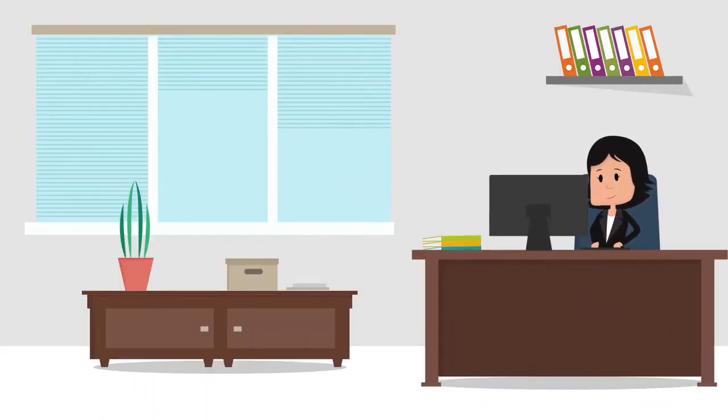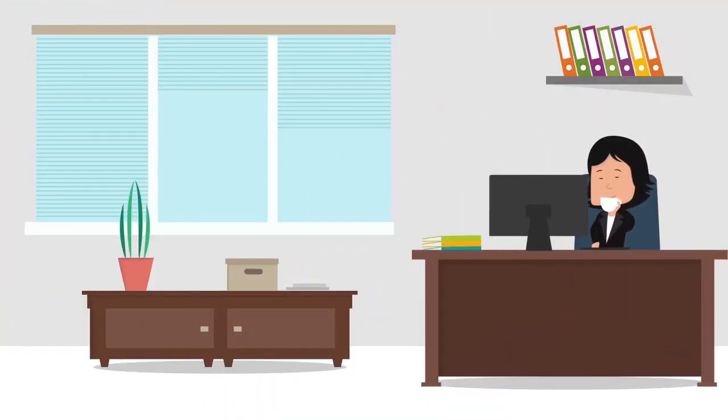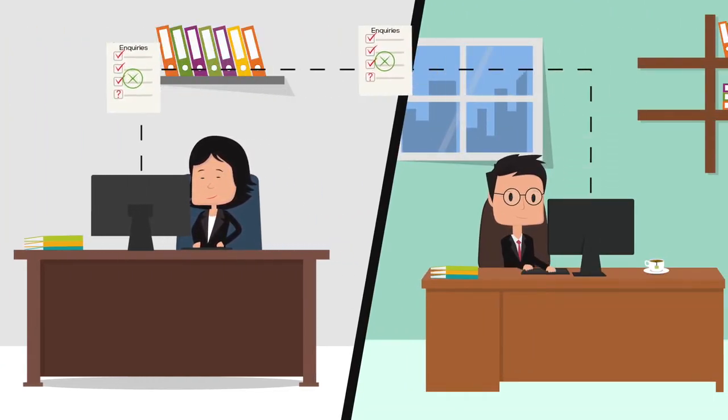As the searches come back, your conveyancer will check the results and ask the seller to help with any issues that come up, for example, providing copies of planning agreements revealed in the local search. Your conveyancer will report to you on the searches and whether there's anything to worry about.